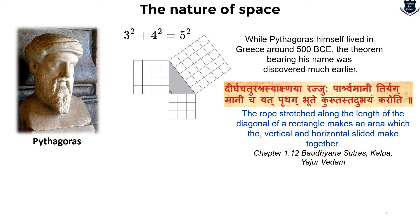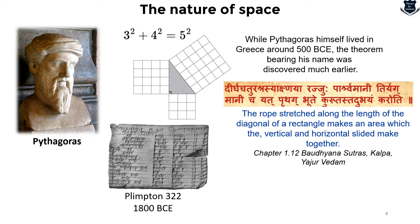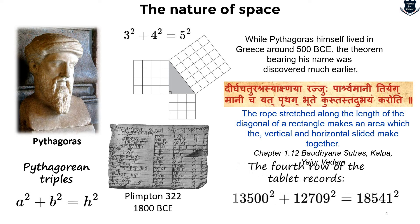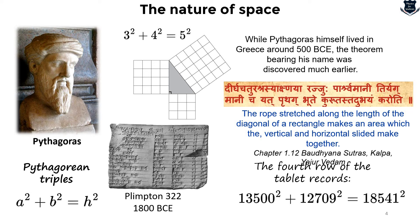Before or during the time of Pythagoras there were numerous examples stating the same theorem. The earliest known example is recorded in the Babylonian clay tablet called Plimpton 322, which existed around 1800 BCE, unearthed in what is now Iraq. The tablet lists Pythagorean triples — integers where a² + b² = h². For example, the fourth row records something like: 13502² + 1270² = 1851².